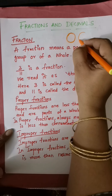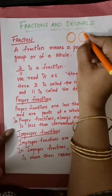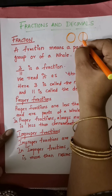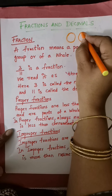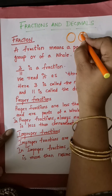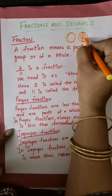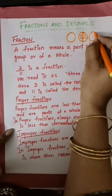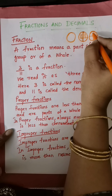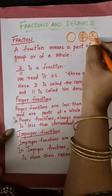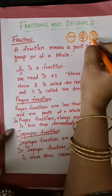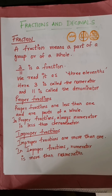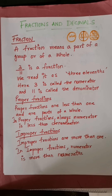If I divide the whole into two equal parts, it is a fraction of a whole. If a thing is divided into two equal parts, each part is called half. Similarly, if you divide it into four equal parts, each part is called a quarter. So this is whole, this is half, and these are quarter pieces. A fraction means a part of a group or of a whole.